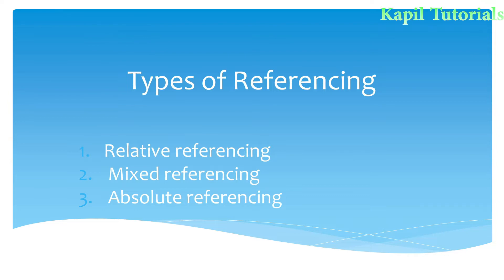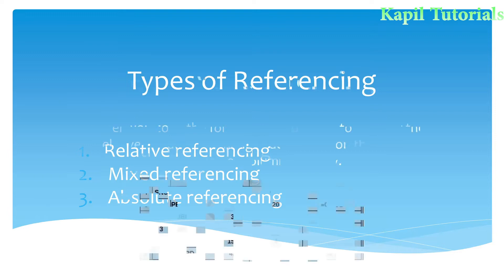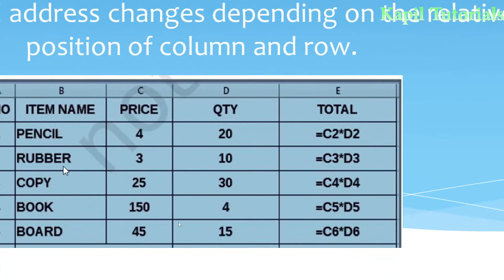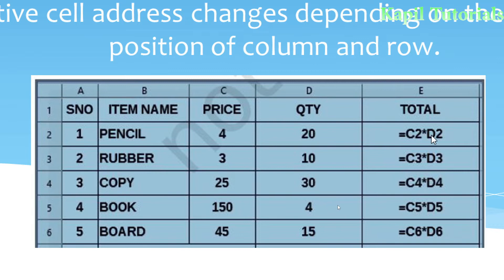So what is the basic difference between all three? With this example, it will be clear to you. For relative referencing, when you copy a formula from one cell to another, the relative cell address changes depending on the relative position of the column and row. For example, here you can see C2 has been multiplied by D2.